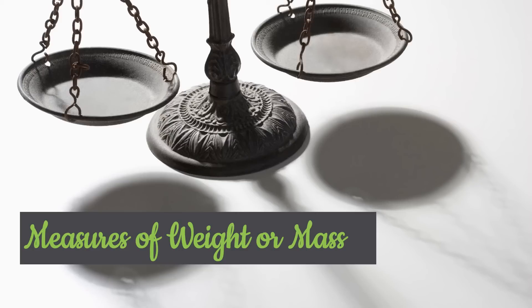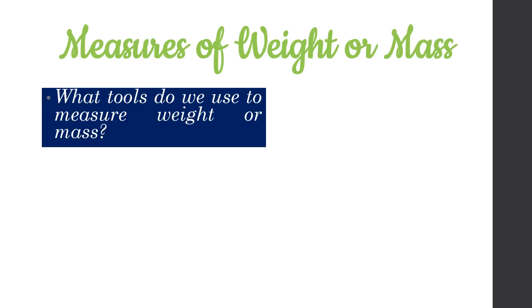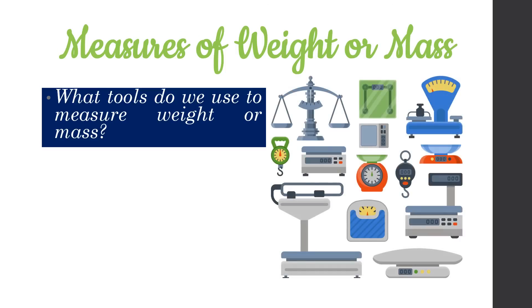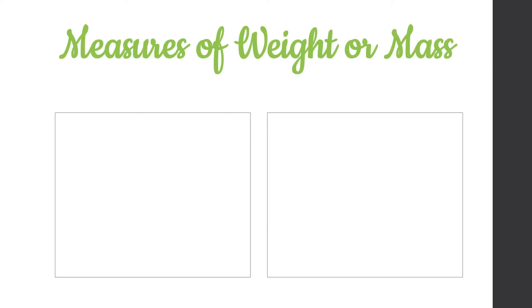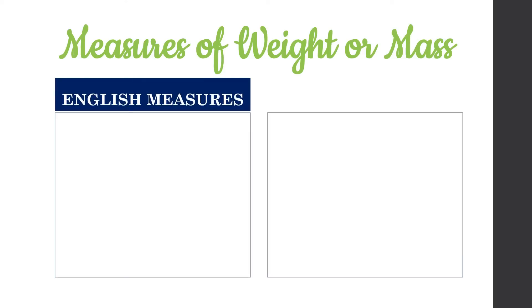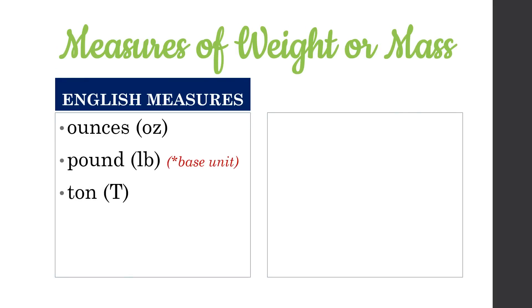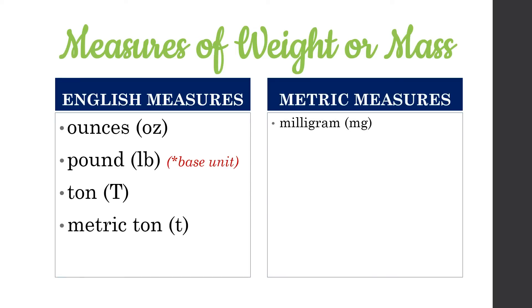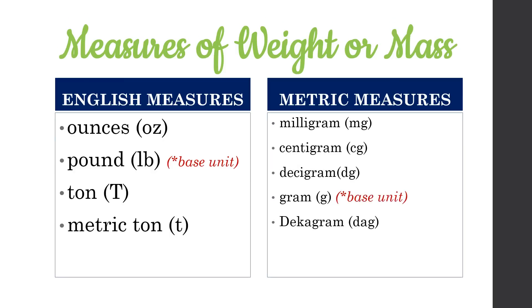We now move on to measures of weight or mass. We can see different types of weighing scales and balances used to measure weight or mass. For English measures, we use ounces, pound (the base unit), ton, and metric ton. For metric measures, we use the same prefixes — milli-, centi-, deci-, deca-, hecto-, and kilo- — added to the base unit, gram. So we have milligram, centigram, and so on.